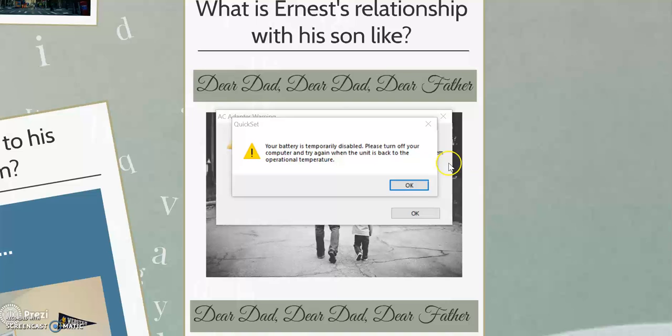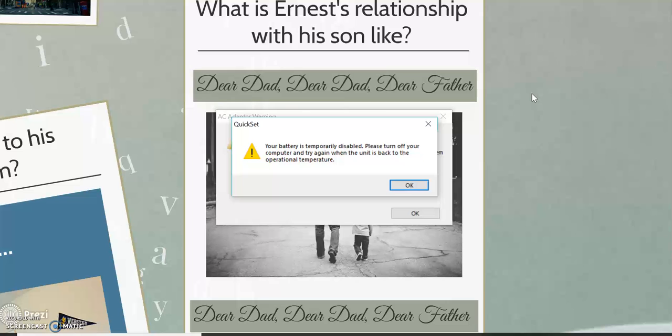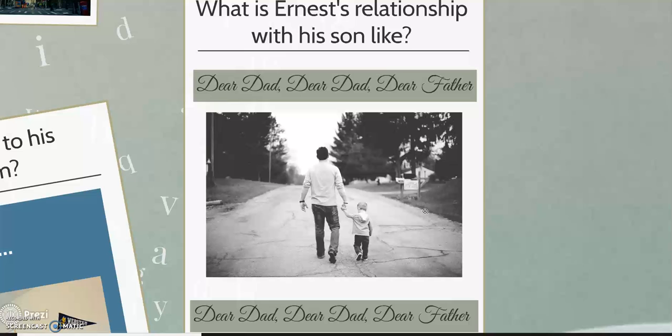One of the saddest parts of the story are the letters that Ernest finds, where Gordon tries to reach out to him but can never finish the letter, let alone send them. I think that speaks to a much broader issue in relationships between fathers and sons — the son wants to reach out to their father and just doesn't quite know how to. That's one of the saddest parts of the story.